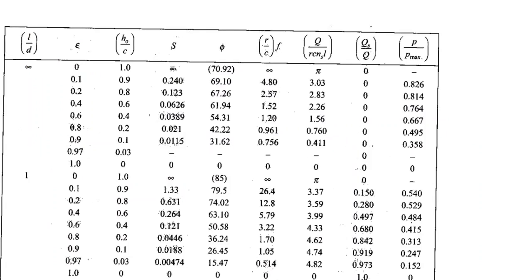This is Table 16.1 from the Bhandari design data book — dimensionless parameters for hydrodynamic journal bearing with side flow (full journal bearing with side flow). All the formulas are at the top of the table: l/d, eccentricity ratio epsilon, ho/c ratio, Sommerfeld number S, angle phi, r/c·f, q/(r·c·ns·l), and qs/q — so you don't need to remember them separately.